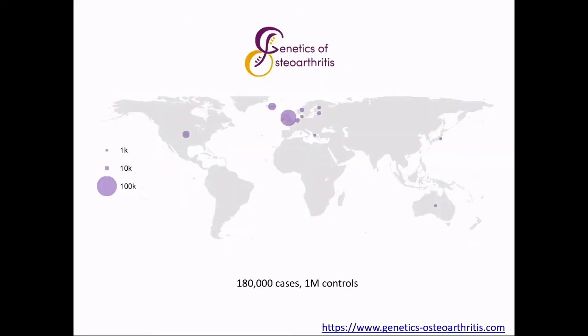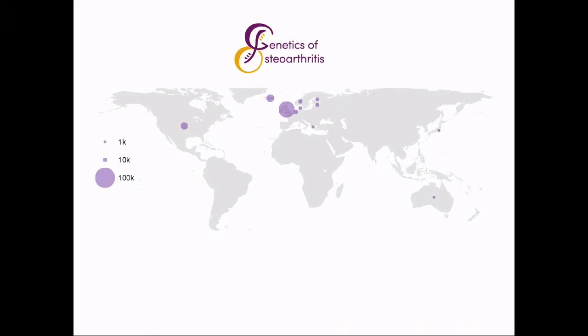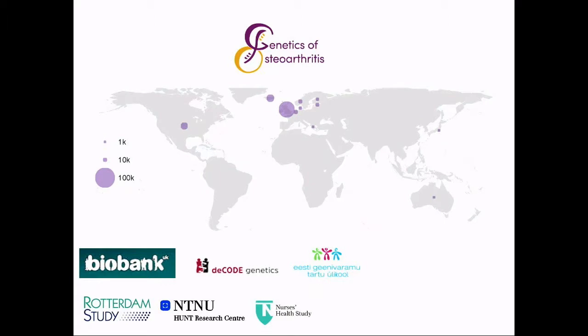Moving forward within the strand of bigger sample size, international collaboration is key. Last year we founded the Genetics of Osteoarthritis, or GO Consortium, which brings together all available and accessible datasets for osteoarthritis with genome-wide genotype data. We've currently performed the first freeze of this meta-analysis across 180,000 cases and over a million controls. The contributing cohorts come mainly from the northern hemisphere and include population-based cohorts, disease registries, and populations linked to electronic health records.